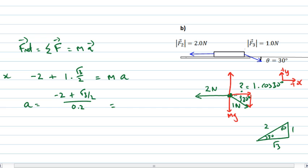If I put those numbers in, we end up with minus 5.7 meters per second squared as the acceleration. So that tells me that my acceleration is to the left. It's in the minus x direction. That kind of makes sense because the component of the 1 newton force acting to the right here must be smaller than 2 newtons.